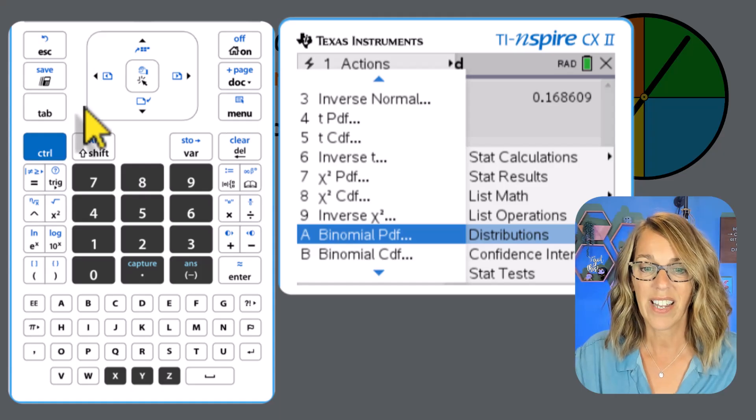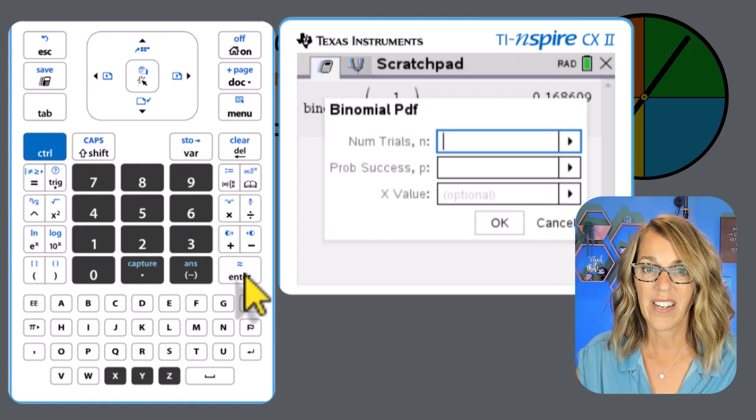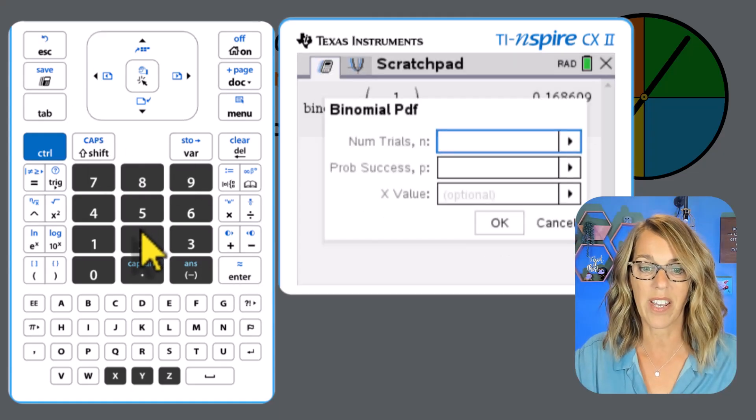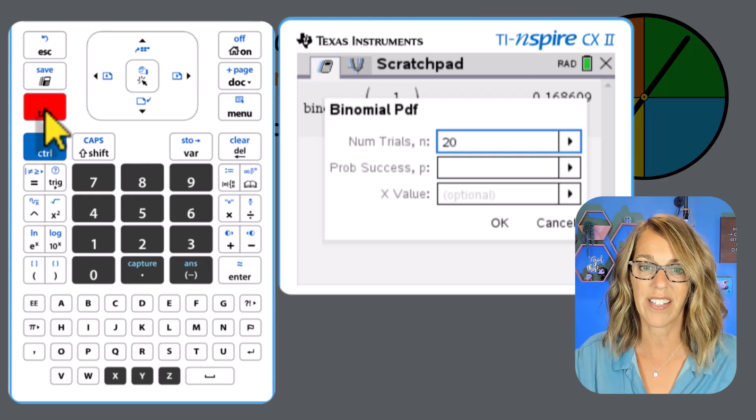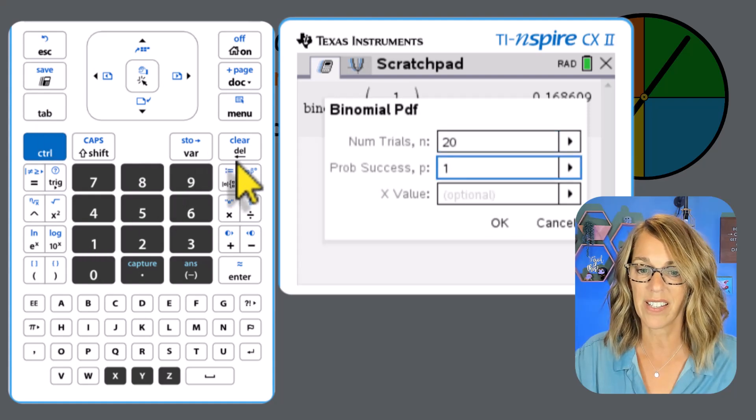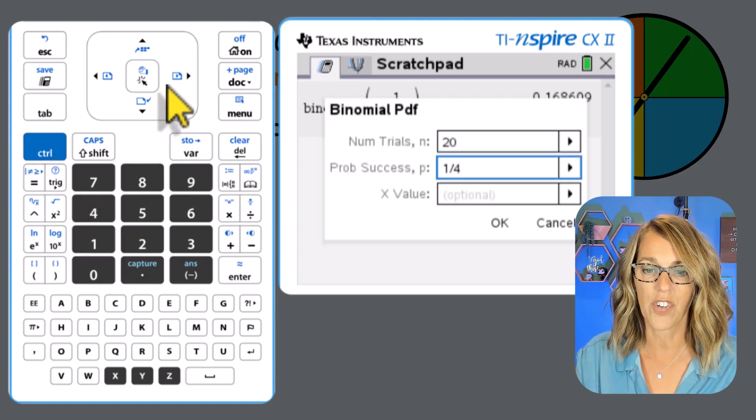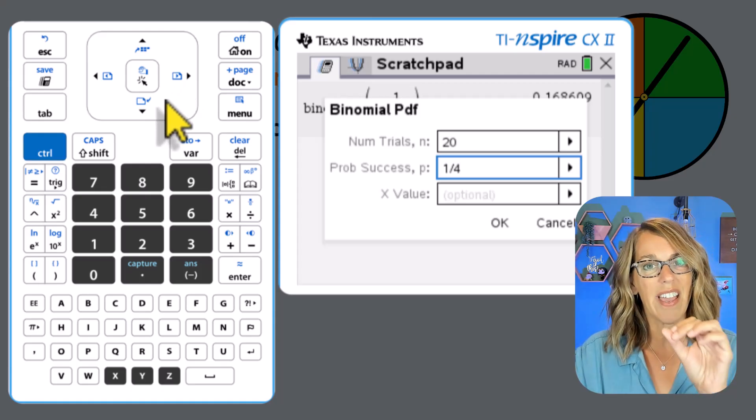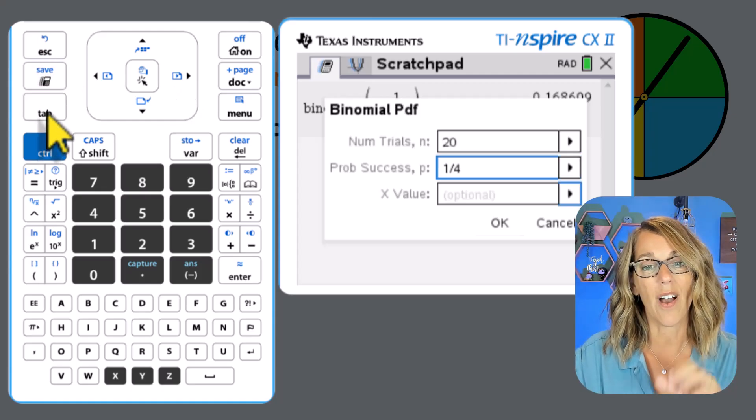So binomial PDF, let's hit enter. And then it's going to ask me all those same things again. So yes, there are still 20 trials, tab probability of a success, still landing on yellow is a one out of four chance.